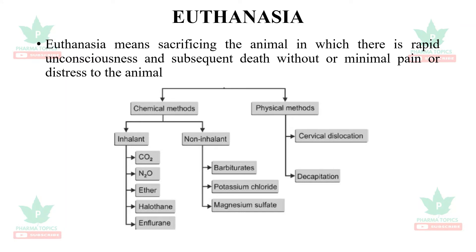What is euthanasia? Euthanasia means sacrificing or killing the animal with rapid unconsciousness and subsequent death with minimal or no pain or distress. There are two methods of euthanasia: chemical methods and physical methods.